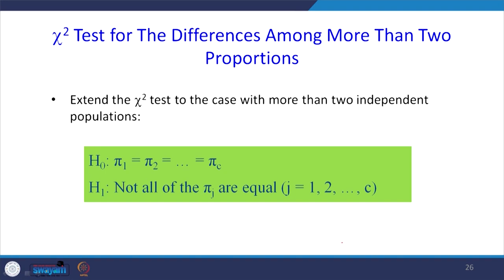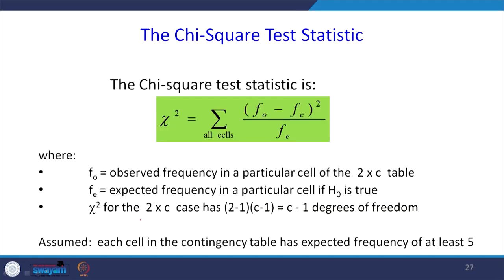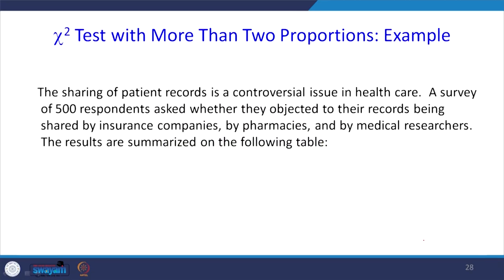There may be situations where we need to compare more than two proportions. We can extend the chi-square test to more than two independent populations, for example with null hypothesis π₁ = π₂ = π₃ and alternative hypothesis that not all proportions are equal. The formulas remain the same: F_O is observed frequency, F_E is expected frequency, and the degrees of freedom is (rows − 1)(columns − 1). Consider a survey of 500 respondents asked whether they objected to their records being shared by insurance companies, pharmacies, and medical researchers.